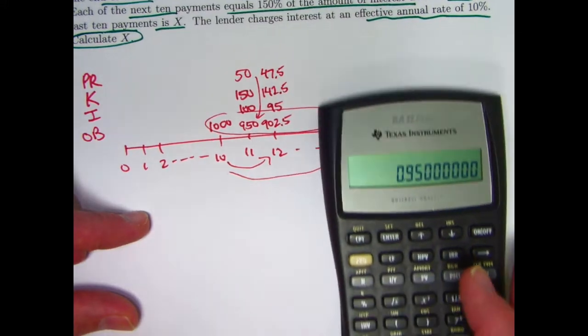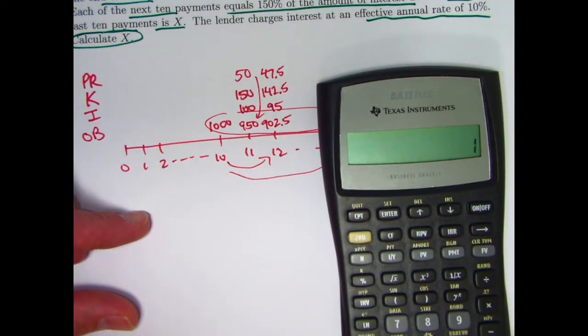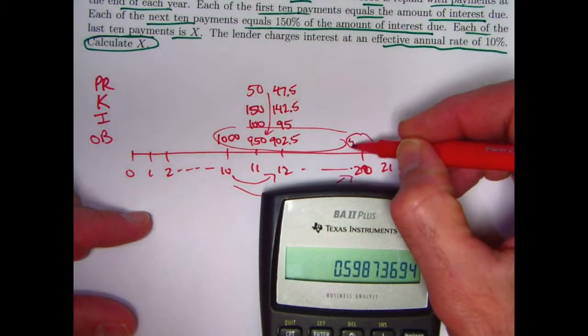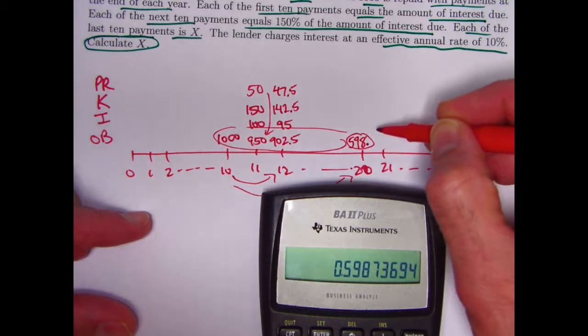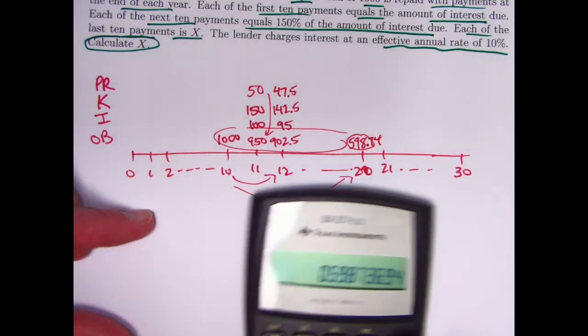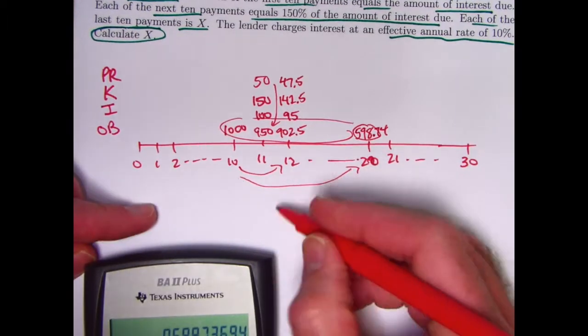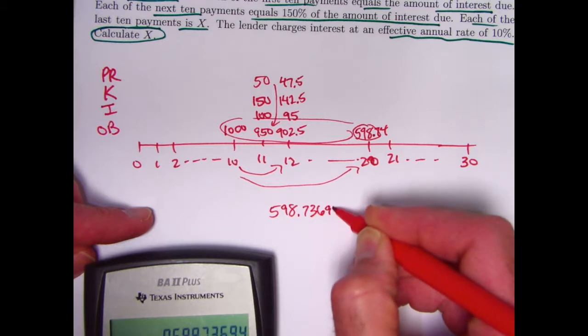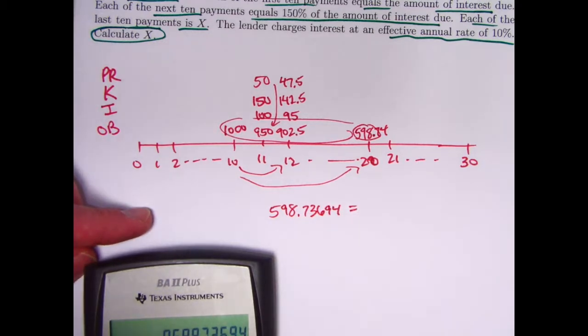0.95 to the 10th power is this. Multiply that by 1,000, you're going to get a new balance of 598.74. I'll go ahead and carry more decimals, like I often do, down here, just being a little bit paranoid about it there.